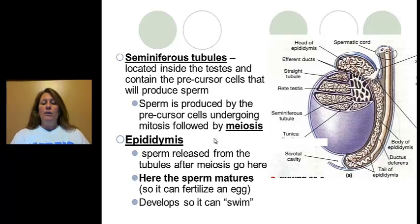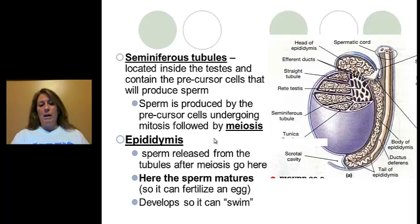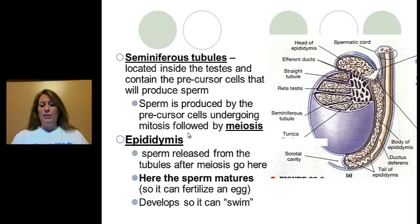Here is a key difference between male and female. Males and females both go through meiosis, but males will first go through mitosis, then meiosis. Females only go through meiosis. This is why males can continue to produce sperm and be a father late into their years — even into their 80s.